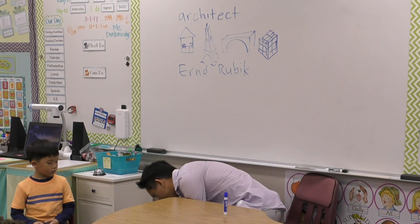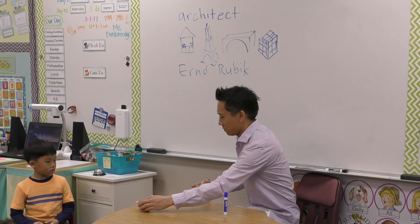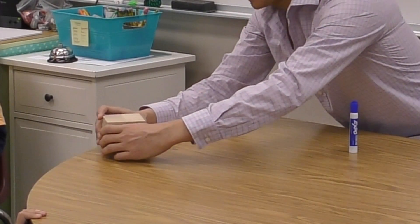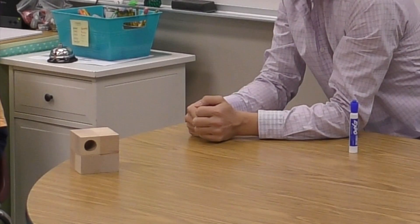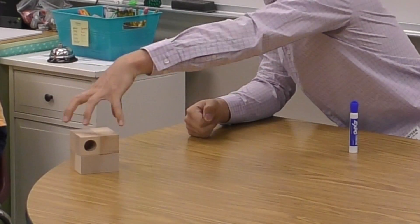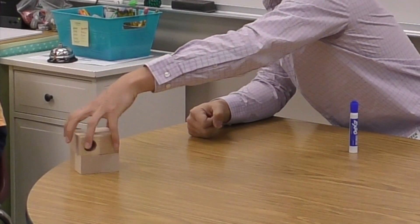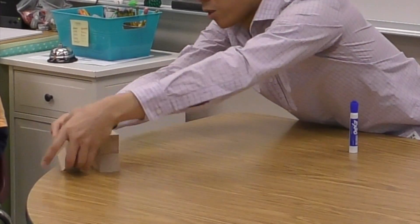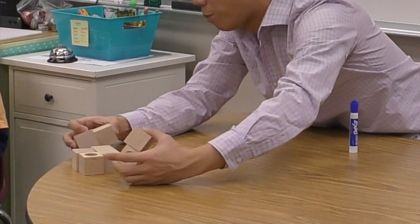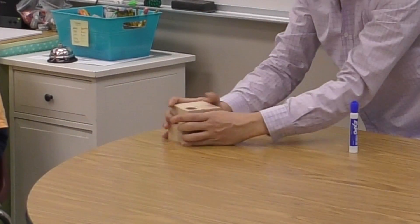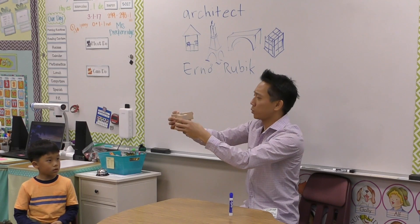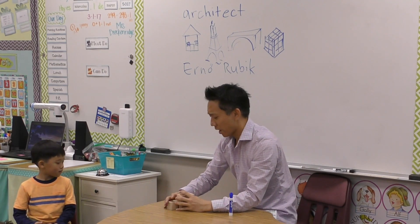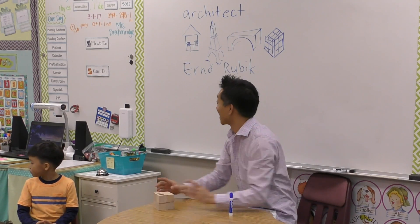He wanted to build something made out of blocks like this, but he had this idea that he wanted this structure to turn this way or turn this way but not fall apart. He wanted to build something which was like a cube but which would stay stuck together even if you turned stuff around, and he wondered if he could do this.